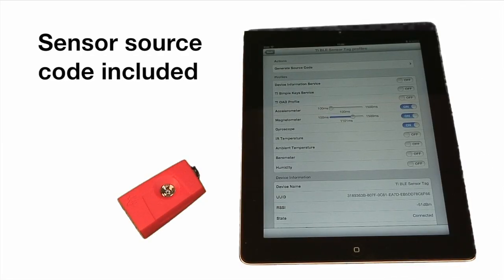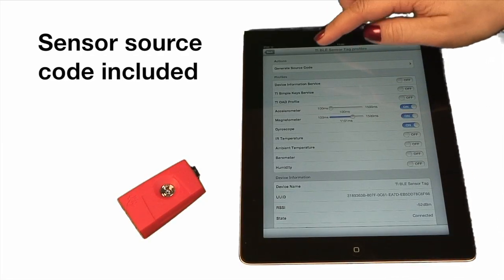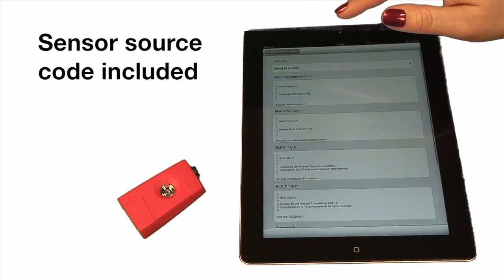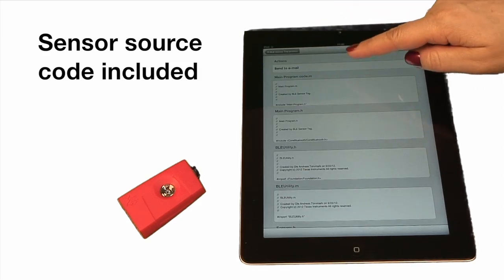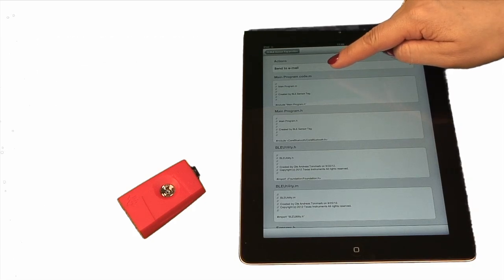The source code of the app is free. And if you want to make your own app, in this case the air mouse, you can generate the source code and email it to yourself.